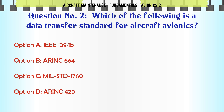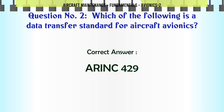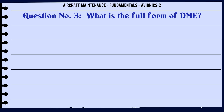Which of the following is a data transfer standard for aircraft avionics? A. IEEE 1394, B. ARINC 664, C. MIL-STD 1760, D. ARINC 429. The correct answer is ARINC 429.